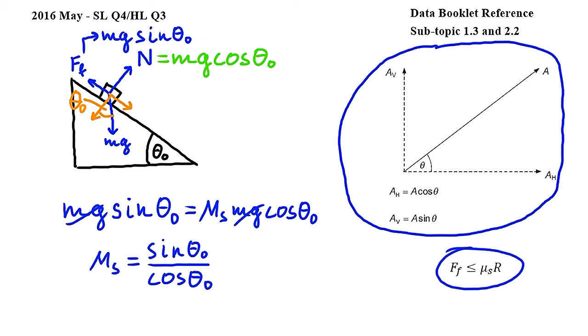Sine over cosine is tangent, so we get tangent theta 0 for mu s, which means that the answer to this question is d.